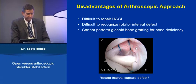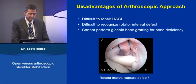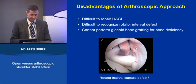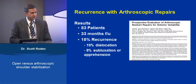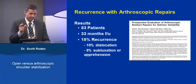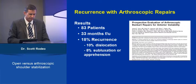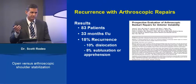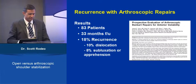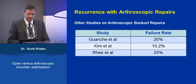Other concerns regarding the arthroscopic approach: it is difficult to repair a humeral-sided avulsion of the glenohumeral ligaments, difficult to recognize a rotator interval defect, and difficult to perform glenoid bone grafting for bone deficiency, although some are carrying out arthroscopic Latarjet procedures. Recurrence rate is critical in shoulder instability. In general, recurrence rates with arthroscopic repairs have been higher, though they are getting better as technique improves and patient selection is more appropriate. Our early experience at Hospital for Special Surgery showed an 18% recurrence rate, with some patients — lax individuals, contact athletes — that you wouldn't operate on arthroscopically today.